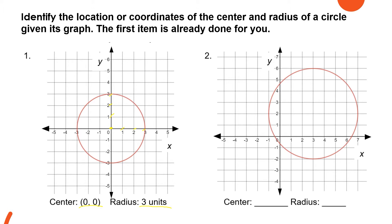Now let's try number 2. We need to locate the center and make sure it is equidistant from any point on the circle. After determining the center, we can check if it is equidistant from any points. The points we'll pick are those vertically or horizontally aligned with our determined center.